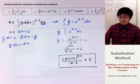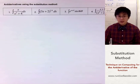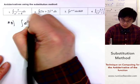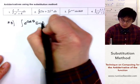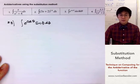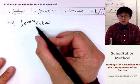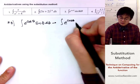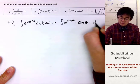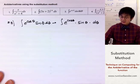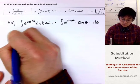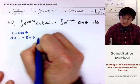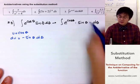For problem number three, we have a combination of functions: e to the u and a trig function. Specifically, the integral of e to the cosine theta times sine theta d theta. I'll rearrange and separate each function to see u more clearly. In this case, I'll set cosine theta as my u. So u equals cosine theta, and the derivative of u is negative sine theta d theta.